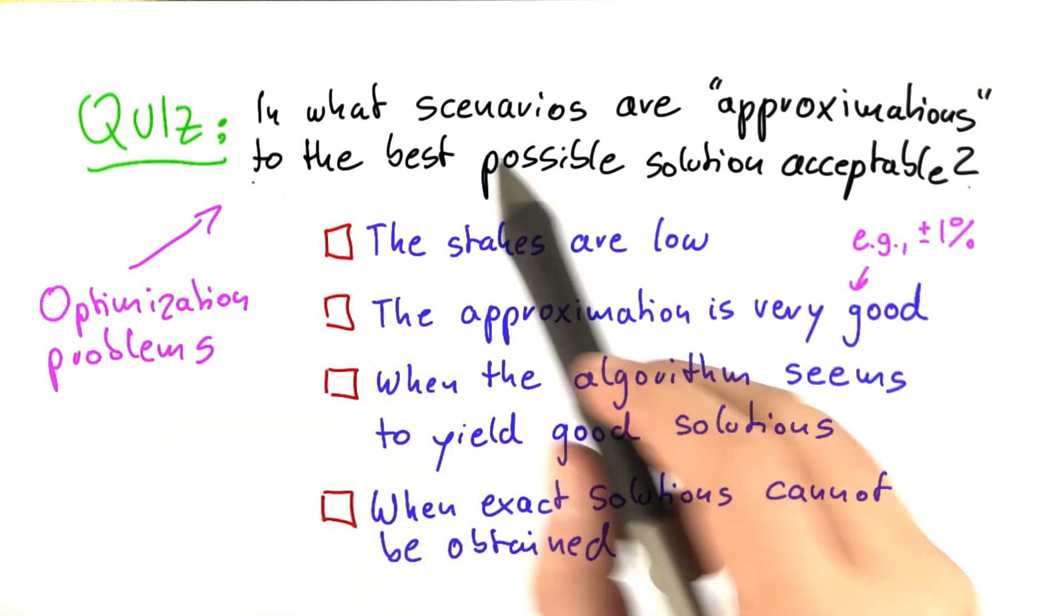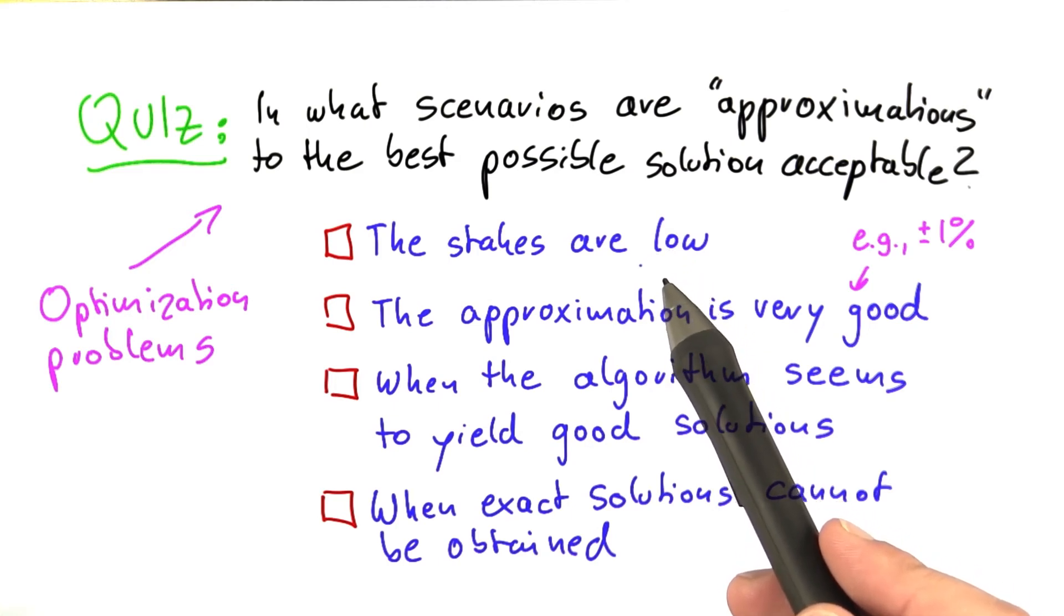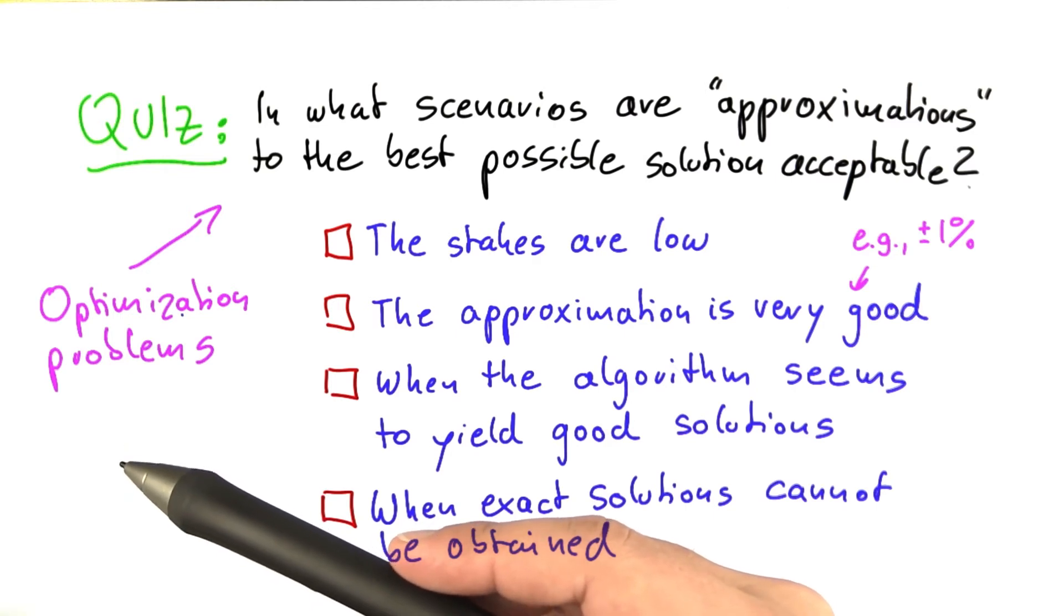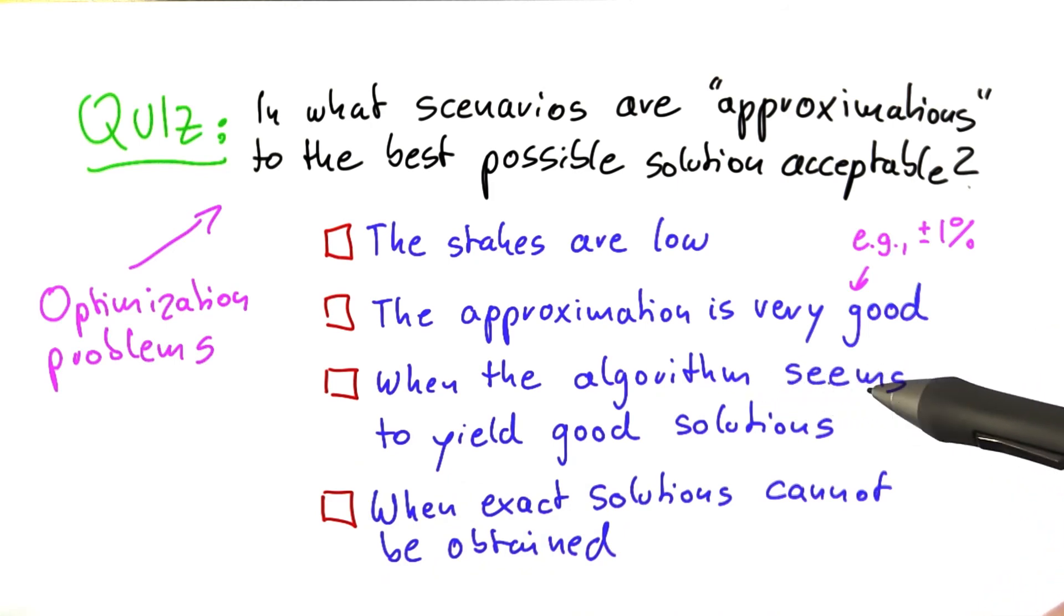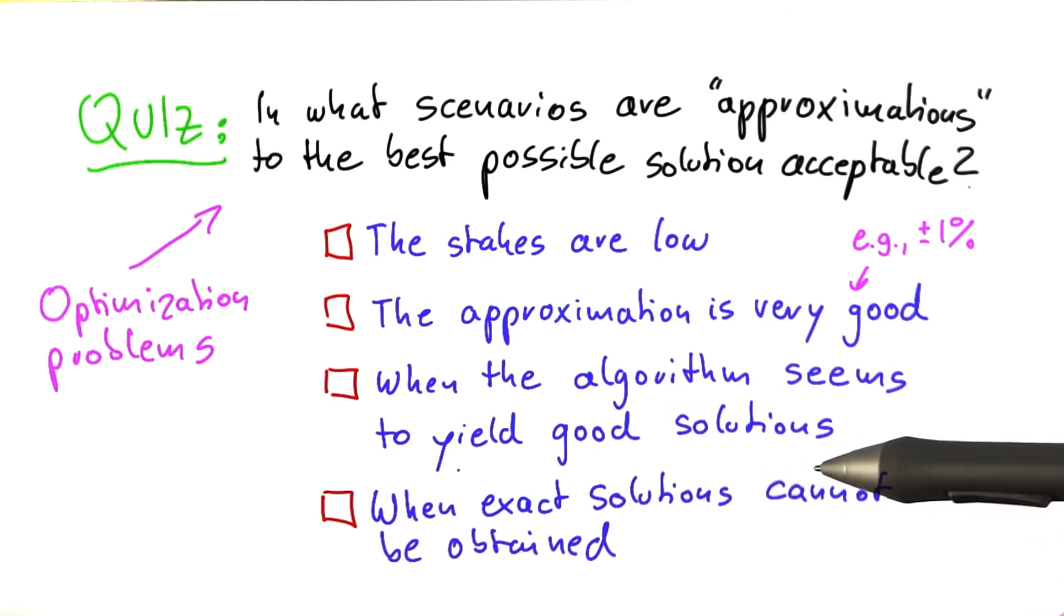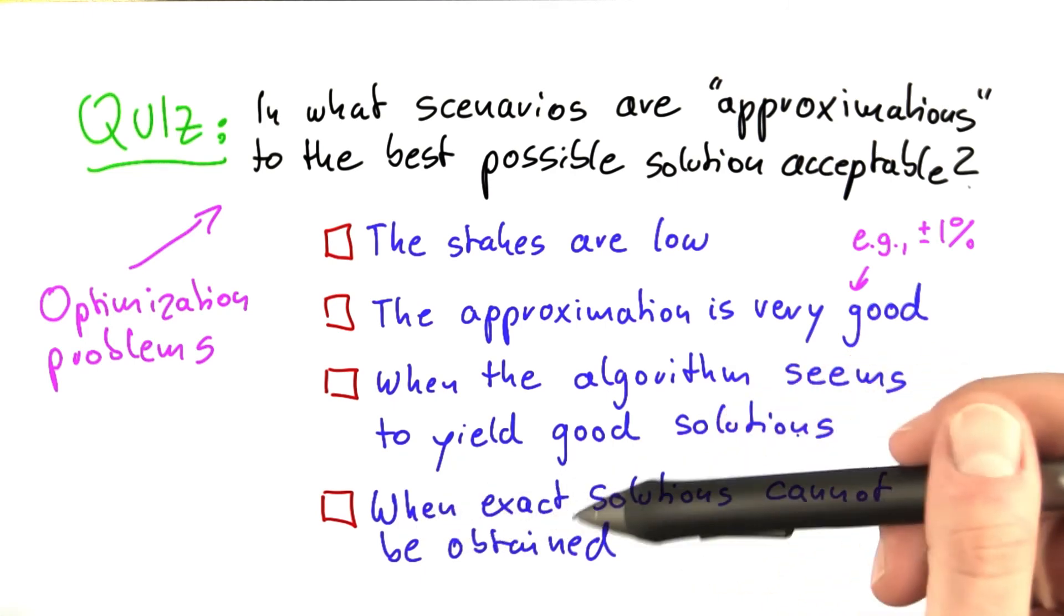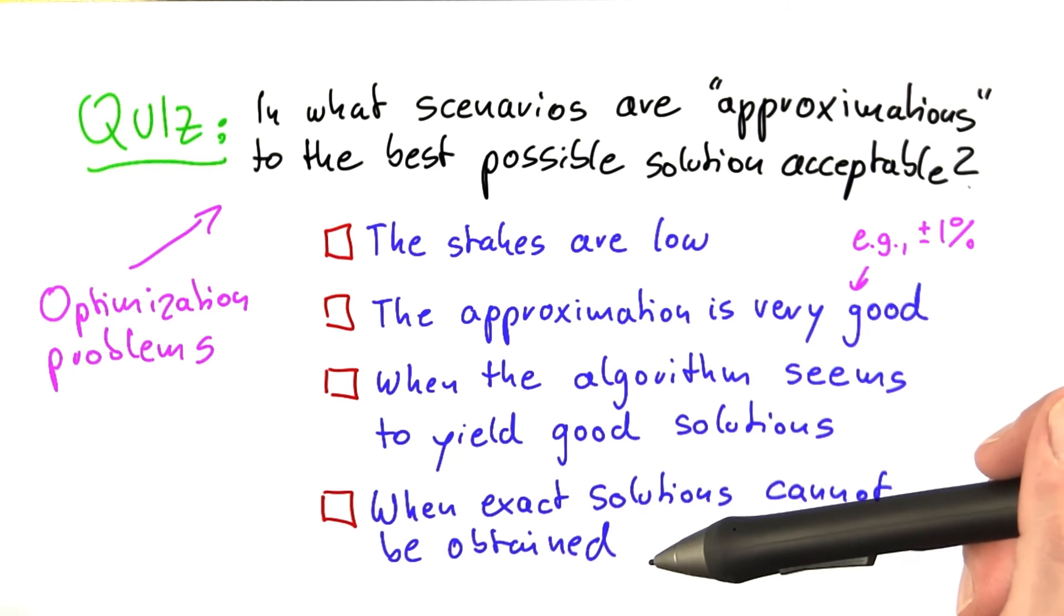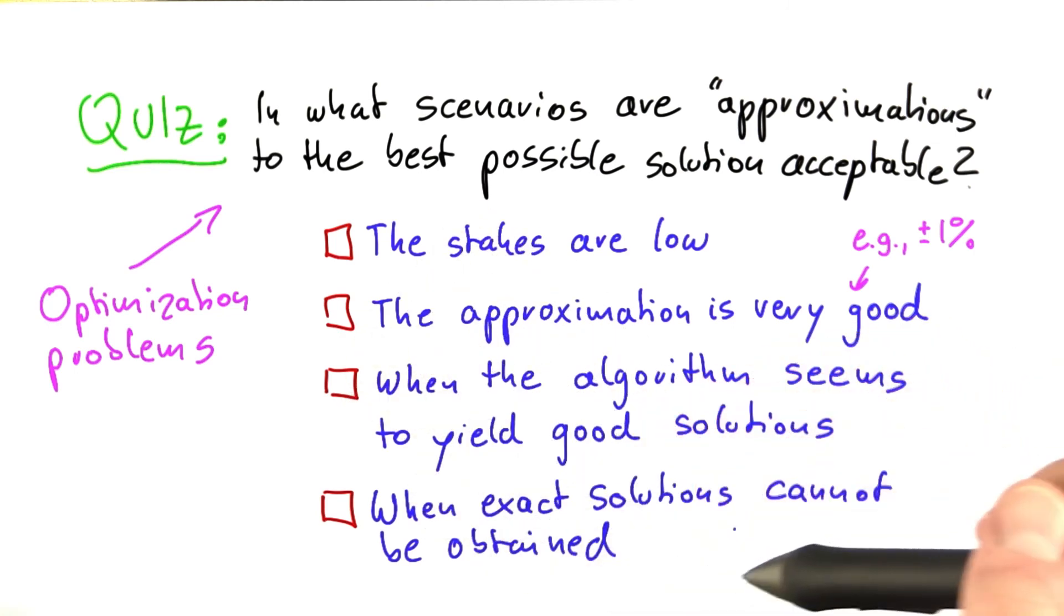So would we be content with approximations if the stakes are low? We're solving a problem where nothing is really critical. Would it be acceptable if the algorithm kind of sounds good? We do not have a provable guarantee, but it still appears to yield good solutions and make sense in general. And would using an approximation be acceptable if we find that exact solutions are simply out of the question? We're using the best search tree, we're using preprocessing, but still our instances are so large and they behave so badly that we just cannot find an exact solution.